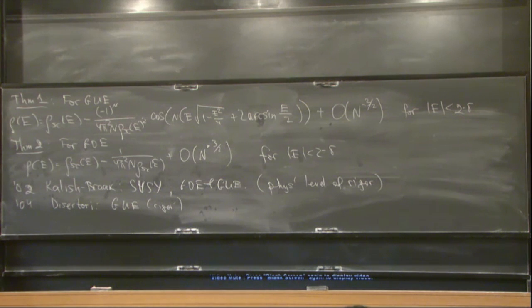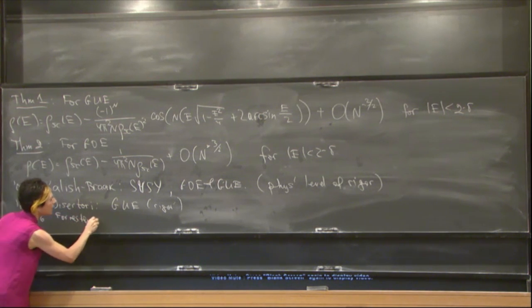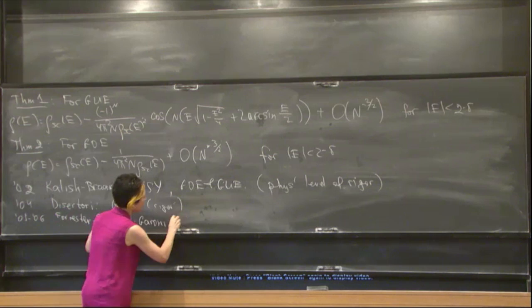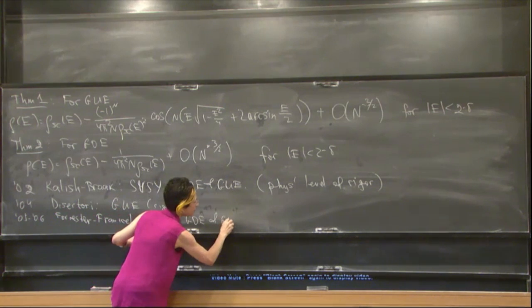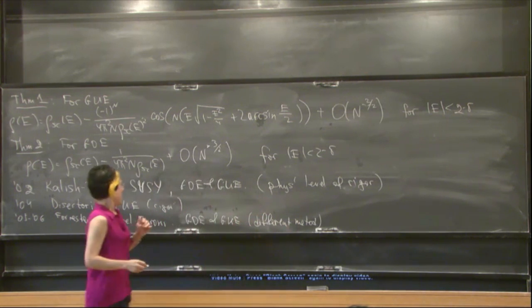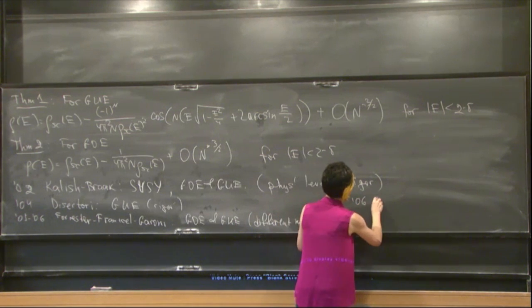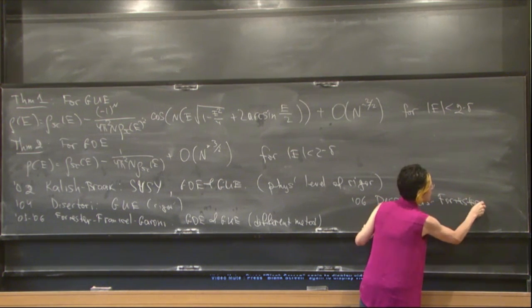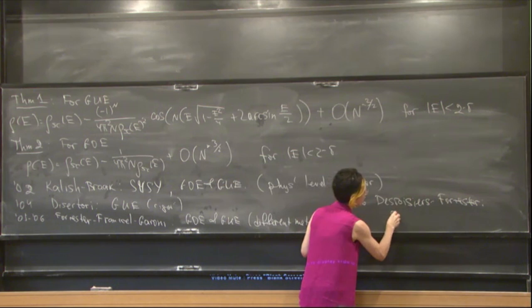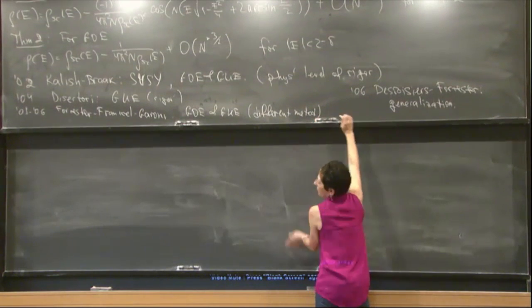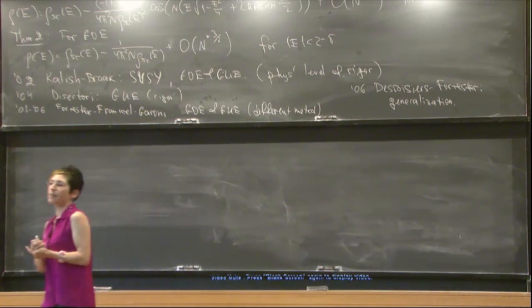In 2005-2006, Forrester, Frankel, and Garoni derived these formulas for GUE and GOE using different methods. In 2006, Witte and Forrester extended these results to the general beta ensembles. This is a generalization. These Forrester methods use orthogonal polynomials. Now let me tell you two minutes about technical details.